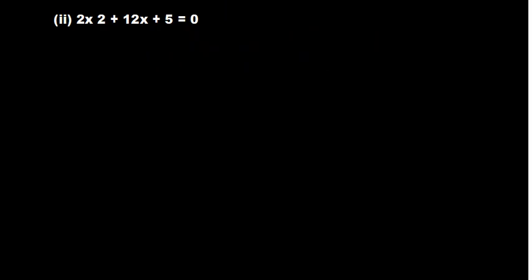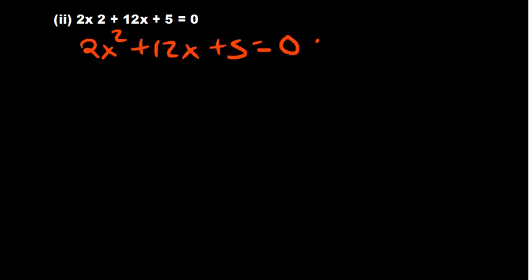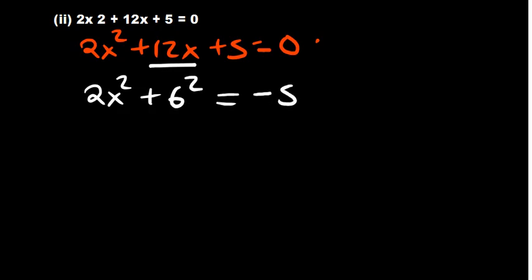Now for another practice problem: 2x squared plus 12x plus 5 equals 0. When you try to apply the method directly, it doesn't work that way. Whenever you use the completing the square method, you need to make sure the coefficient of x squared is 1.